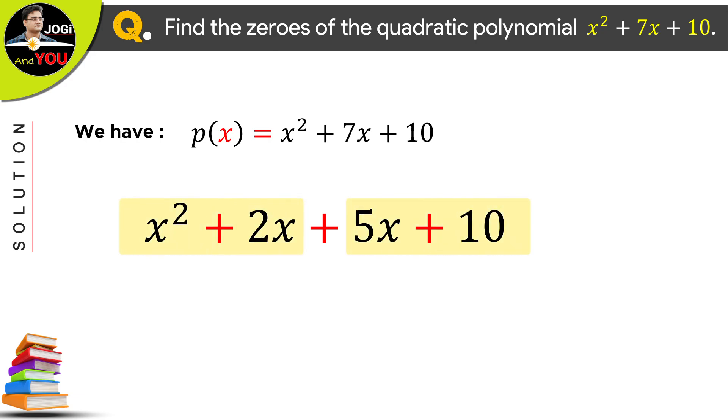And now, look at these two very carefully. x is common in the first two terms. So, take x as common. And 5 is common in the other two terms. That's why, take 5 as common from there.